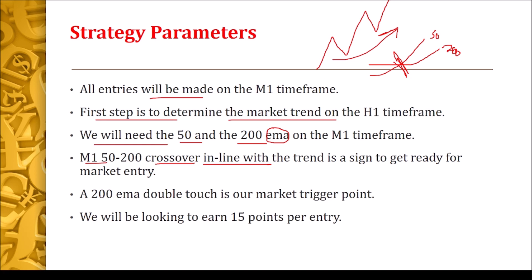A 200 EMA double touch is our market trigger point. After seeing the crossover, we need to see price come back and touch the 200 EMA at least twice — it may touch three or four times, but we need at least two. On the second touch is where we actually trigger the entry. We'll be looking to earn 15 points per entry when trading the indices — US30, NAS100, and UK100.